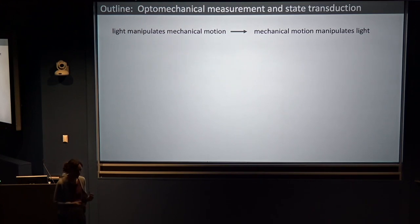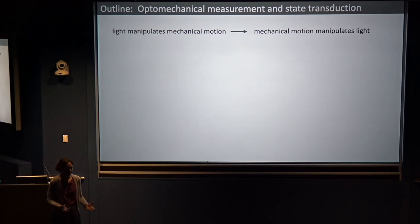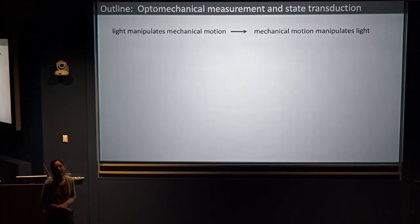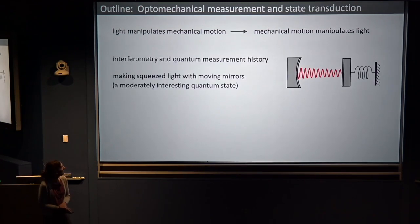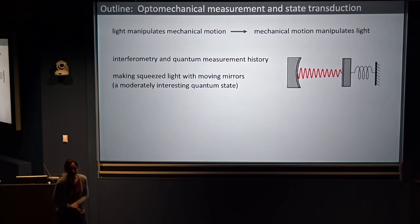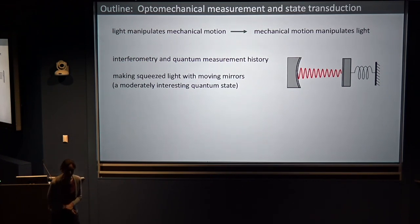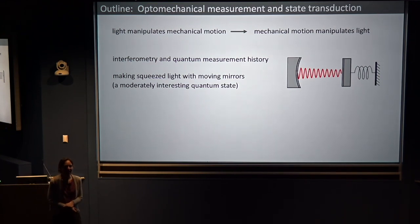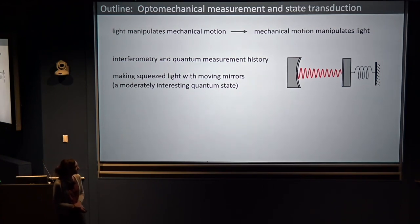In the context of this talk, I'd like to switch this on its head a little bit. I've talked about using light to control mechanics, but I can actually think about the same process as a way where mechanical motion — once I get it into the regime where thermal excitations are small — can manipulate light. I'm going to come at this from an interferometry and quantum measurement history perspective. I'll talk about making squeezed light with moving mirrors, where squeezed light to a quantum physicist is a somewhat boring quantum state, but it's a really good example and a good way to improve sensing with quantum states.